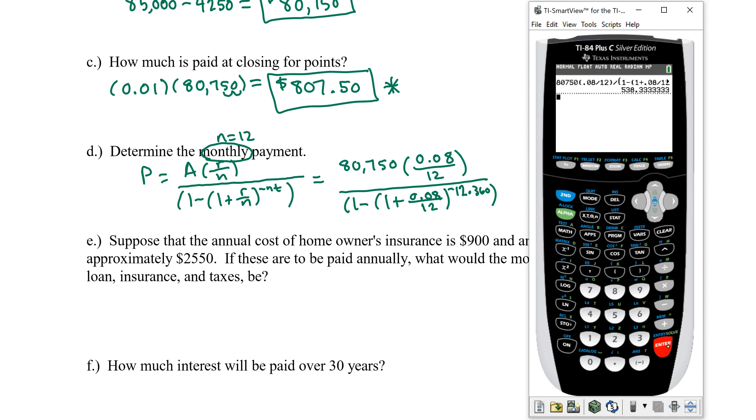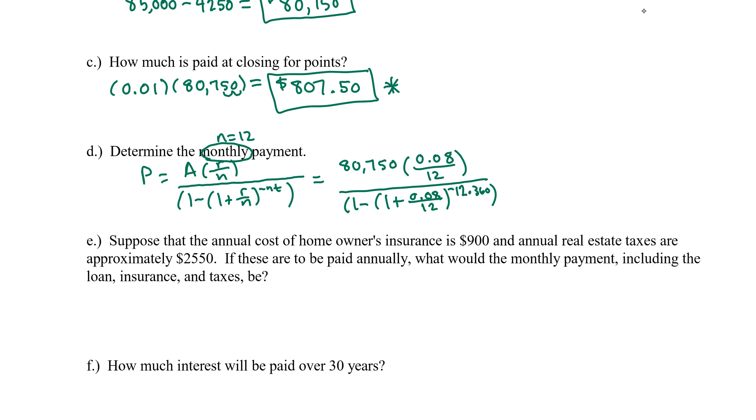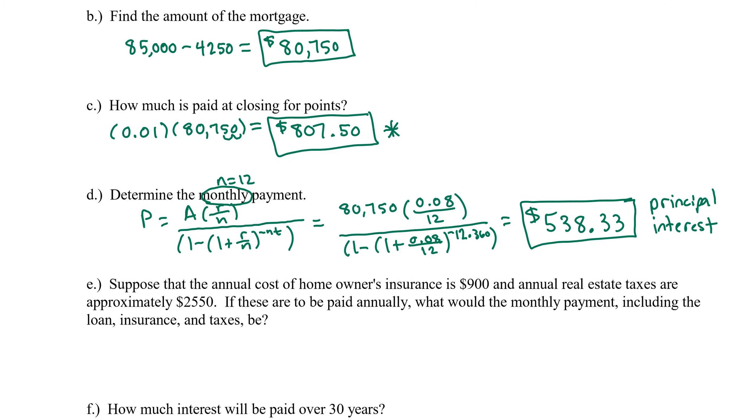Looks like $538.33. So $538.33 on this $80,000 loan. This payment will cover principal and interest.